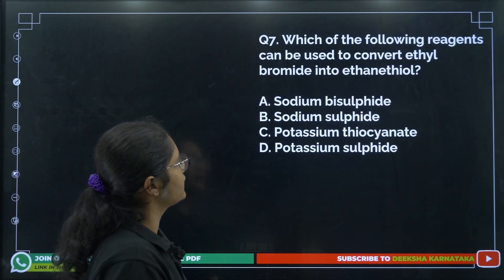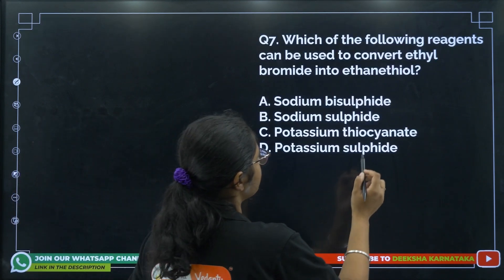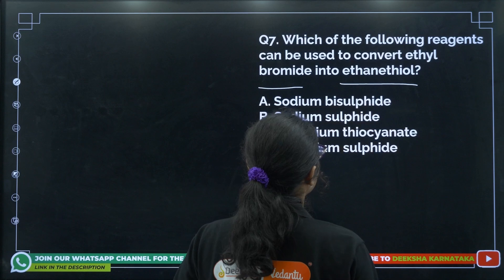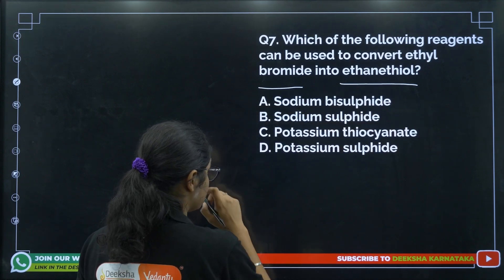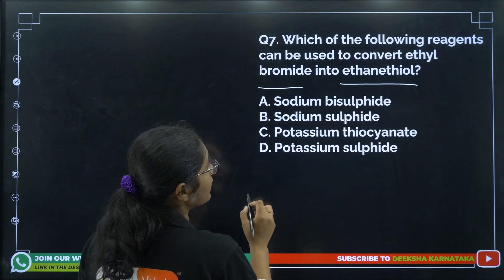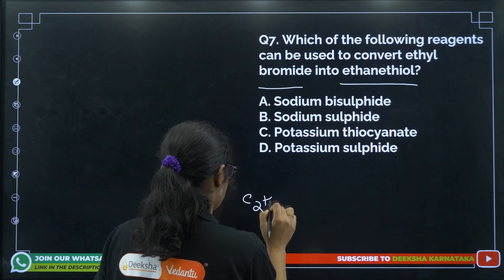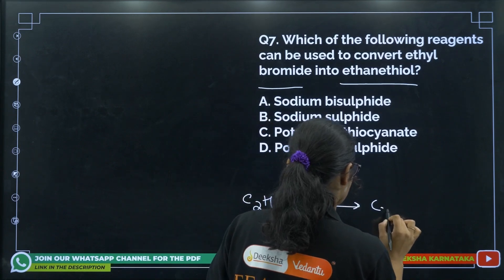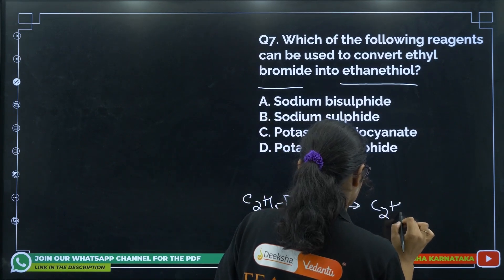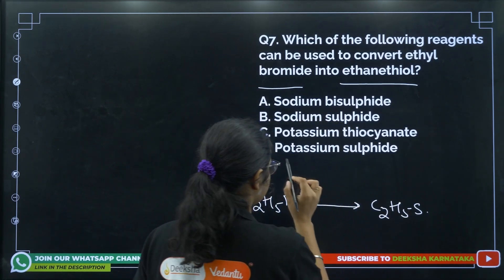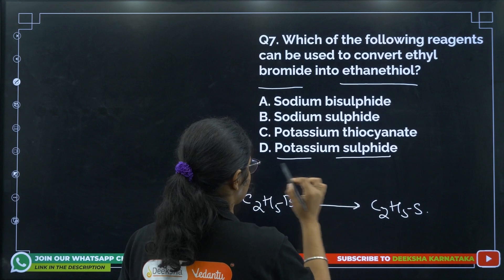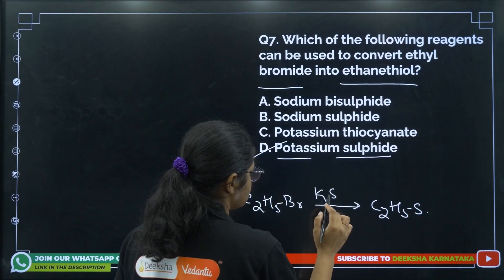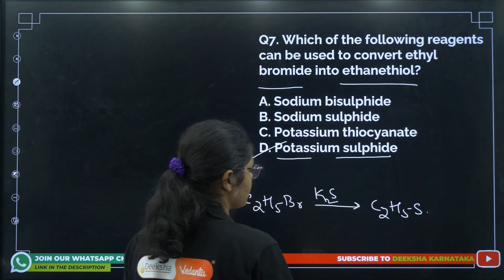Question 7: Which reagent can convert ethyl bromide into ethane thiol? We want to convert ethyl bromide to a thiol. For this we need potassium sulfide. So you can use potassium sulfide for this conversion.